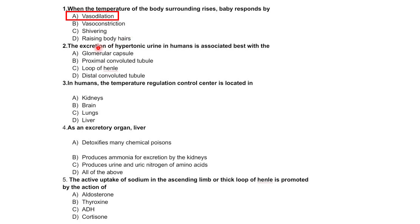The excretion of hypertonic urine in humans is associated best with the loop of Henle and distal convoluted tubule.